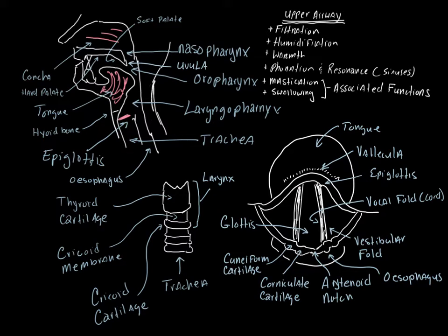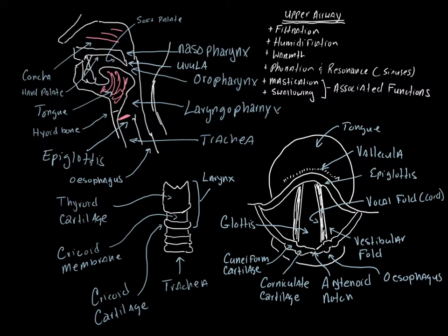When you swallow, the epiglottis covers the glottis and prevents aspiration, allowing that bolus of food to enter the esophagus — the most dorsal structure. The little valley separating the root of the tongue from the epiglottis is known as the valleccula. This is an important anatomical structure because certain types of equipment have been designed to be inserted into it, which we'll discuss in lab.